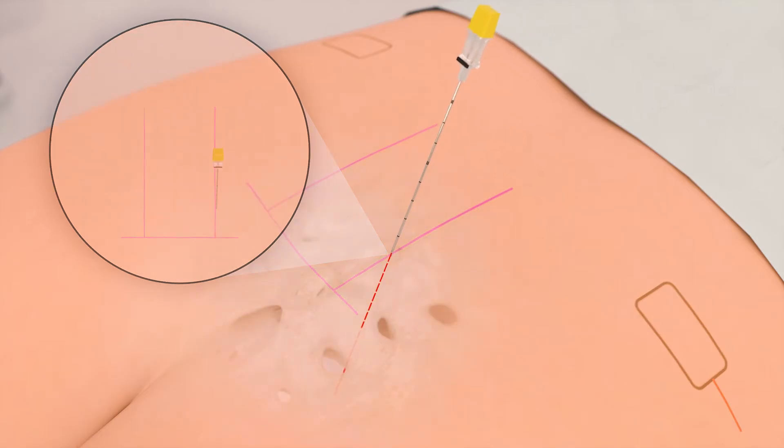A needle entry point that is too cephalad on the skin results in a needle angle going toward S4 which could result in an S4 motor response. Conversely, an entry point that is too caudad will result in the needle angle going toward S2 and could cause an S2 motor response.